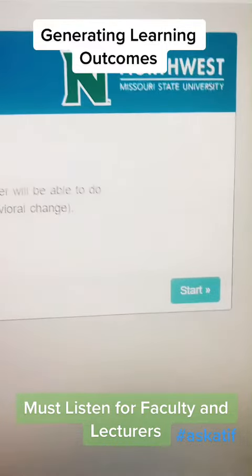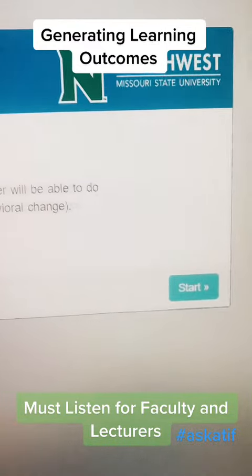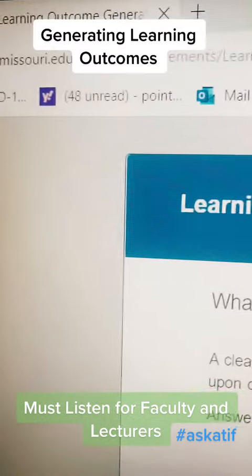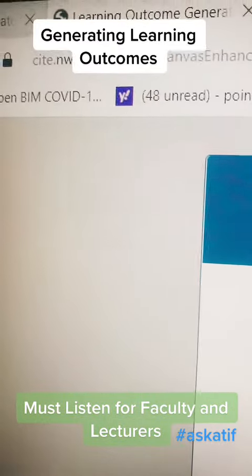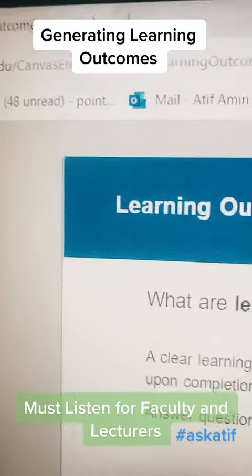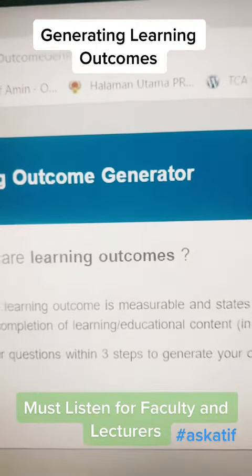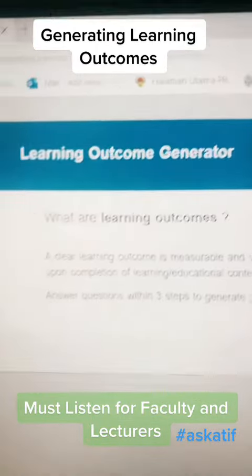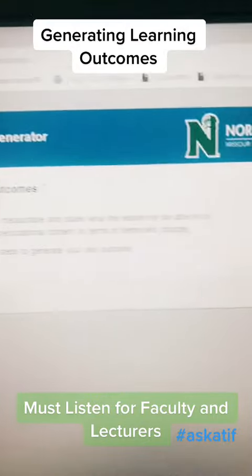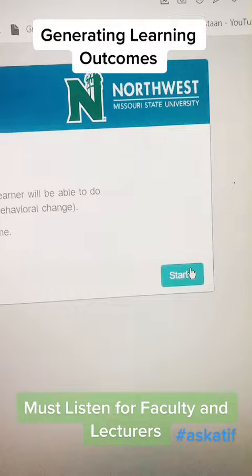What you have to do is go to this website which is under Northwest MSU University. The hyperlink is site.maestery.edu, then canvas enhancements, learning outcome generator, slash index HTML. You can just Google it or bookmark it. This is how it looks like — you have to click Start.